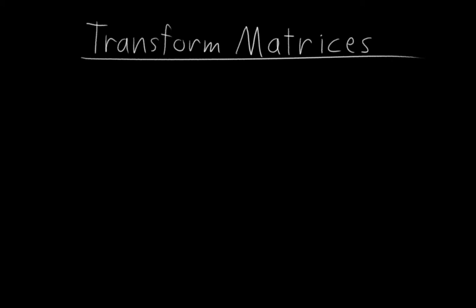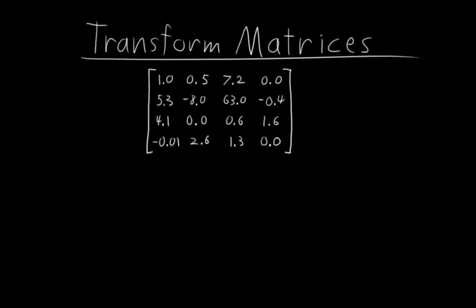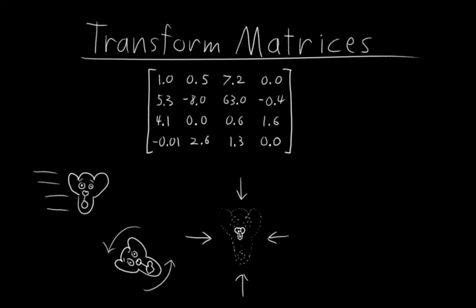So the last thing I want to touch on before we get back to actual rigging is something called transform matrices. A transform matrix is a 4x4 grid of numbers that represents everything about the location, rotation, and scale of an object.